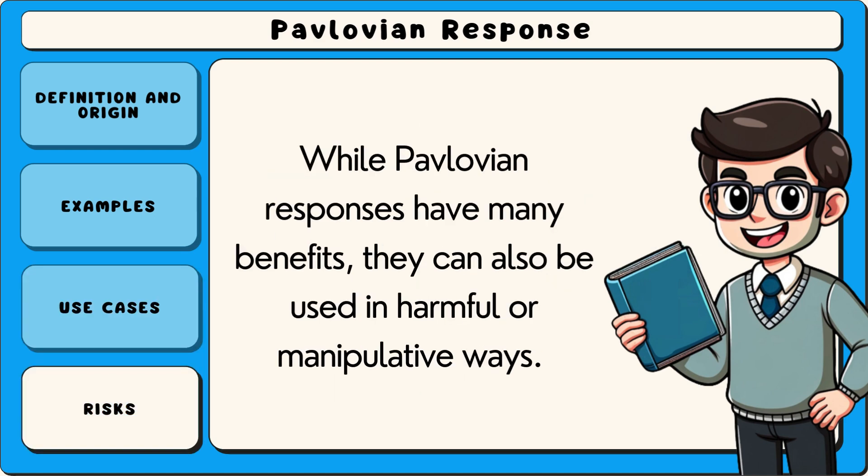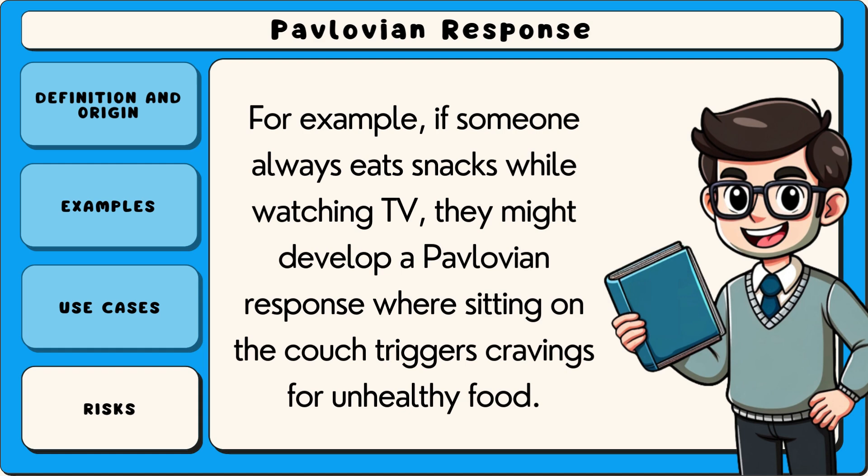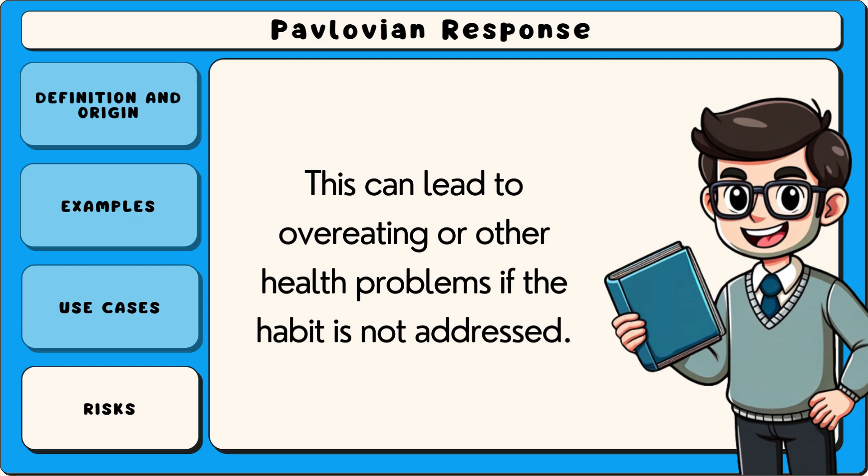While Pavlovian responses have many benefits, they can also be used in harmful or manipulative ways. One risk is that people can develop unhelpful or unhealthy associations. For example, if someone always eats snacks while watching TV, they might develop a Pavlovian response where sitting on the couch triggers cravings for unhealthy food. This can lead to overeating or other health problems if the habit is not addressed.